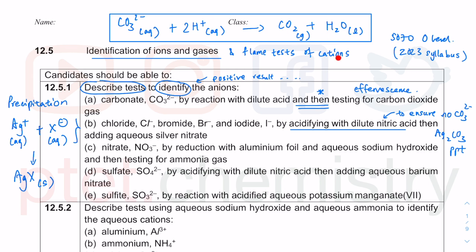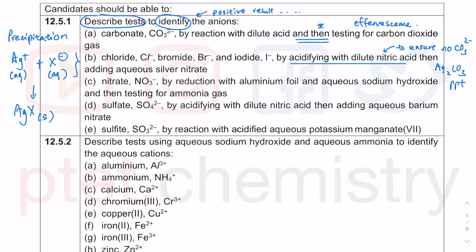The nitrate test involves adding aluminium foil — aluminium solid — then heating with aqueous sodium hydroxide, and testing for ammonia gas produced. The key difference between the NO₃⁻ test and the NH₄⁺ test is that you must have aluminium foil; without it, you do not get ammonia gas. The aluminium foil is required for nitrate to be confirmed present.